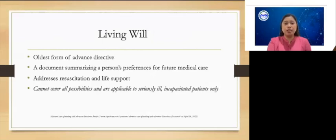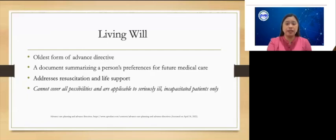The living will is the oldest form of advanced directive. It is a document summarizing a person's preferences for future medical care. Typically, the living will addresses resuscitation and life support. However, a thorough living will may cover patients' preferences regarding hospitalization, pain control, and specific treatments that they may require in the future, and can be modified by the patient to include specific interventions such as cardiopulmonary resuscitation, ventilatory support, or enteral feeding. Living wills are only applicable to seriously ill, incapacitated patients and cannot cover all possibilities.